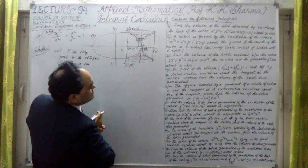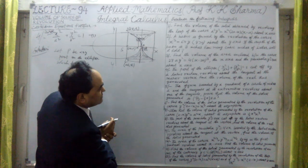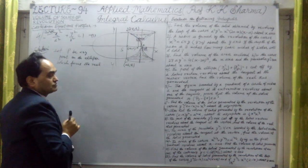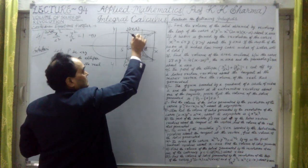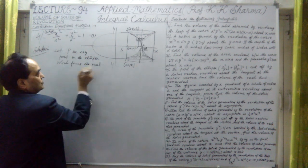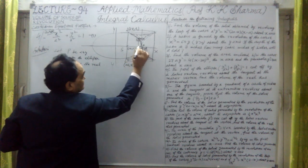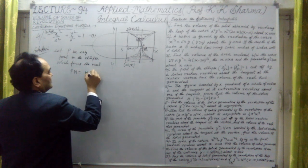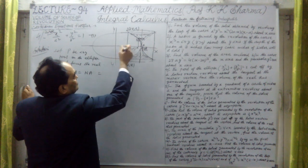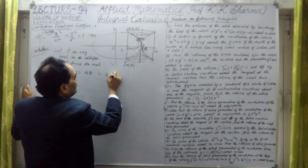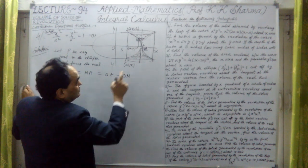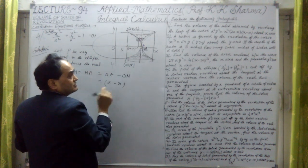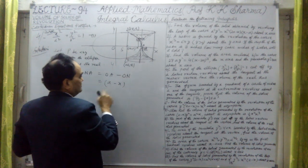This reel is formed here — we have to find this reel. P is taken on the ellipse, with x and y coordinates. The distance PM equals NA, and PM equals NA. What is NA? NA equals OA minus ON, that is OA equals A, minus x — because the x coordinate of P is x. So y-coordinate gives A minus x.